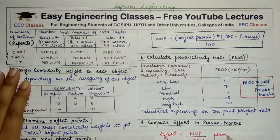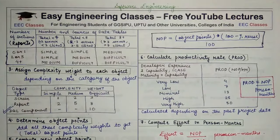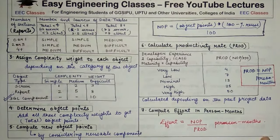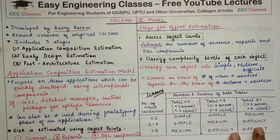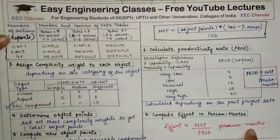The final effort is calculated as: Effort = NOP (New Object Points) / Productivity, and the unit of this value is person months. This is how we apply the COCOMO 2 Application Composition Model using the seven steps, and this is how development effort is calculated. To summarize: first we calculate object points by counting screens, reports, and 3GL components; then we classify each object into simple, medium, or complex using the tables.